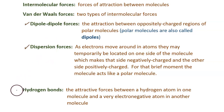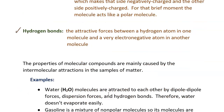Another intermolecular force is called a hydrogen bond. These are the attractive forces between a hydrogen atom in one molecule and a very electronegative atom in another molecule. For example, consider two adjacent molecules: one has a hydrogen atom, and the other has an atom that is highly electronegative — one of those nonmetals from the right side of the periodic chart. The hydrogen atom from the one molecule will have a force of attraction with that electronegative atom in the other molecule. That attraction is a hydrogen bond.